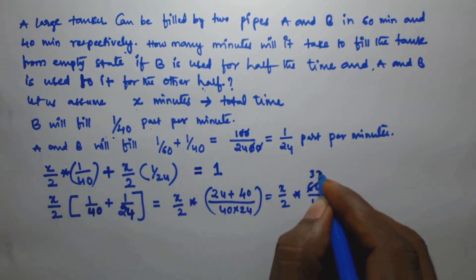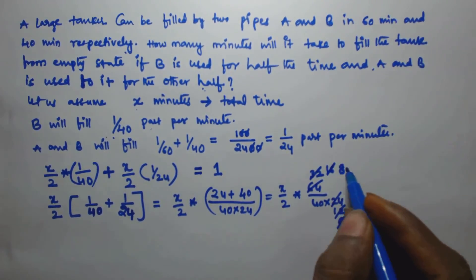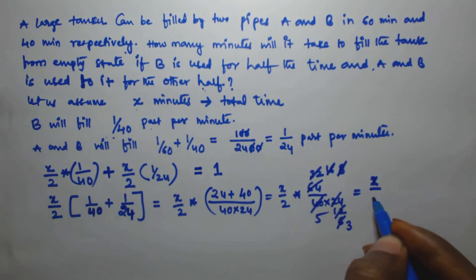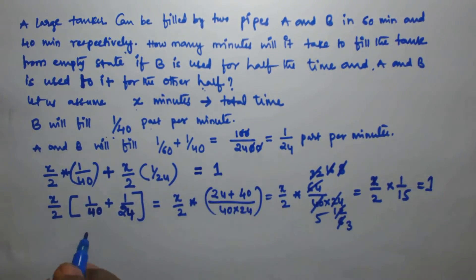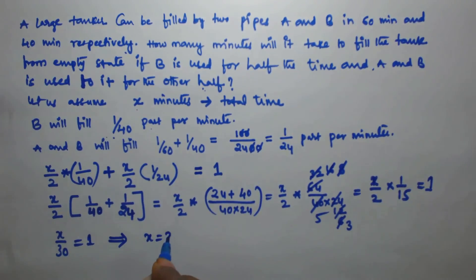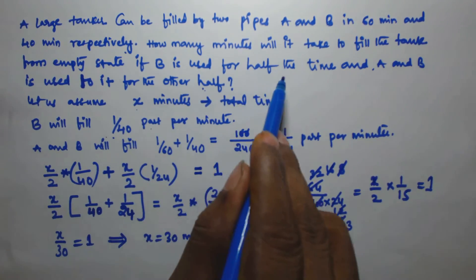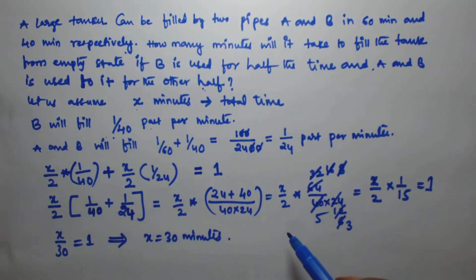Simplifying 64/960: dividing both by common factors gives 1/15. So the equation becomes x/2 × 1/15 = 1, which means x/30 = 1, therefore x = 30 minutes. So the total time taken to fill the tank from empty state, if B is used for half the time and A and B together for the remaining half, is 30 minutes. I hope you got this. Thank you very much for watching.